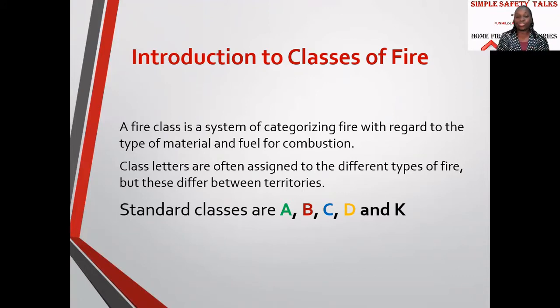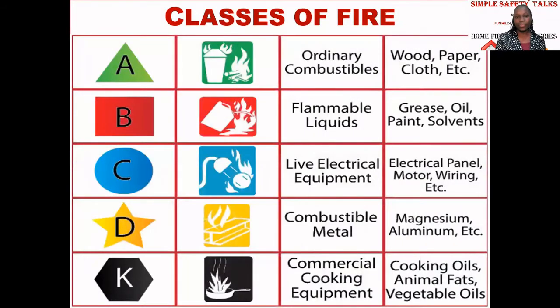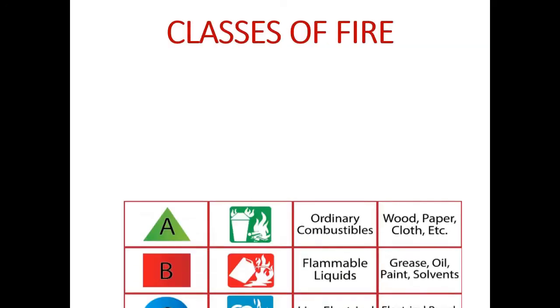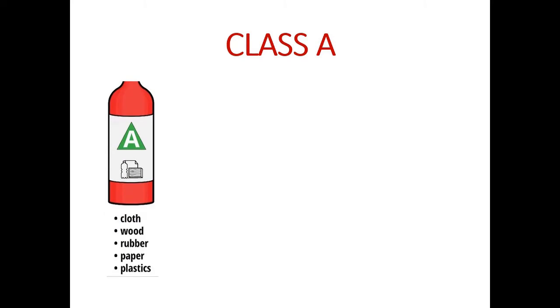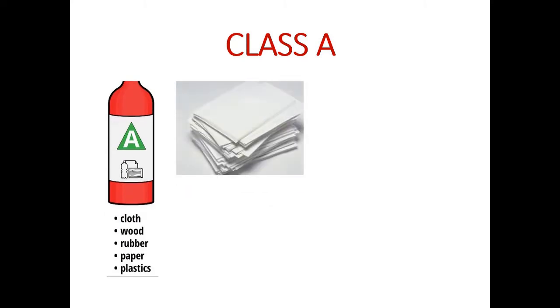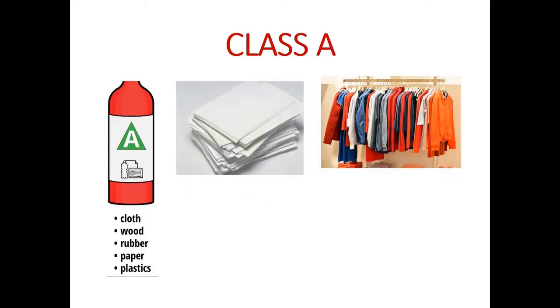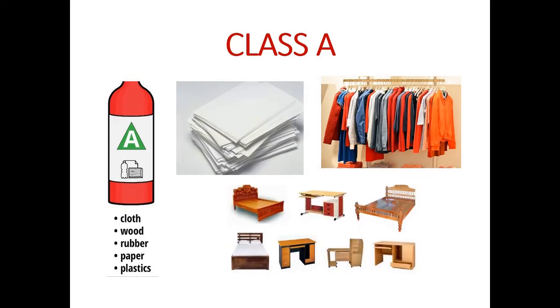We have the standard classes: Class A, Class B, Class C, Class D, and Class K. Class A consists of ordinary combustibles, which are solids — the wood, your paper, your clothes. Everything that is a solid material and an ordinary combustible falls under Class A fires.